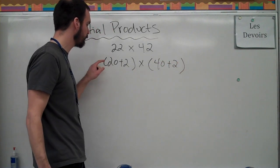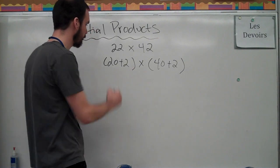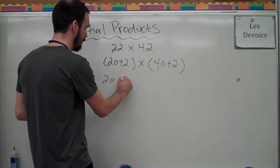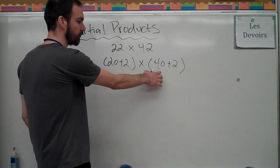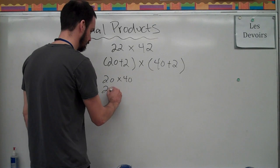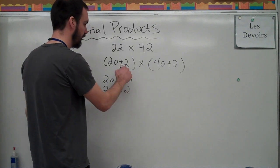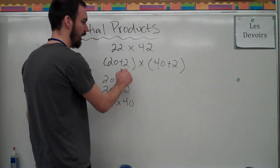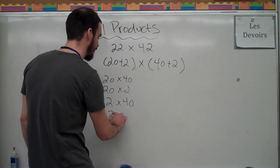And then I'm going to have 40 plus 2. And now I'm going to multiply each number by each number. So I'm going to have 20 times 40, 20 times 40. And then I'm going to have 20 times 2. Then I'm going to have 2 times 40. And then 2 times 2. Just like I did in the array.